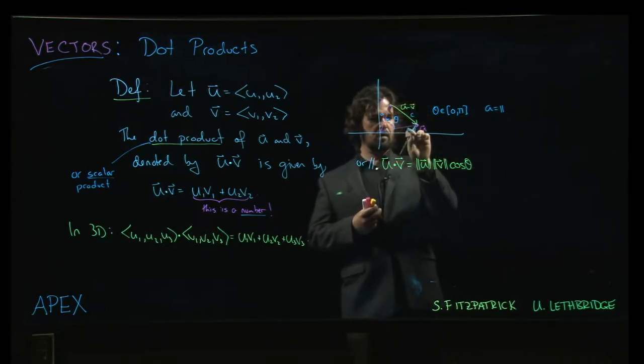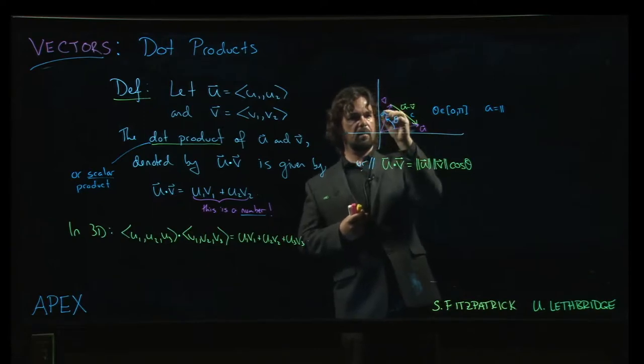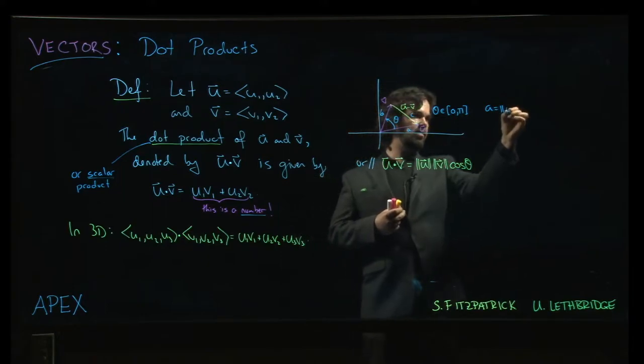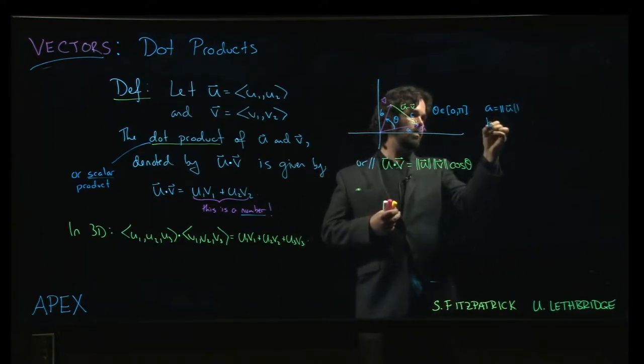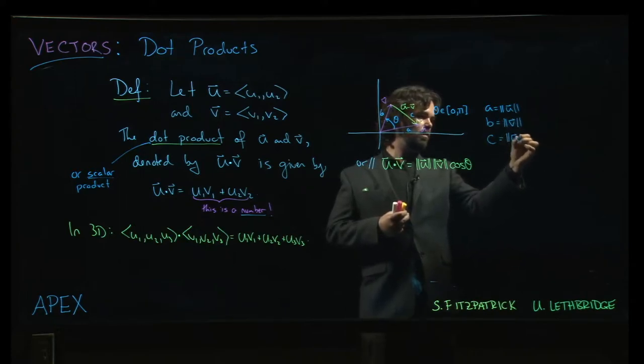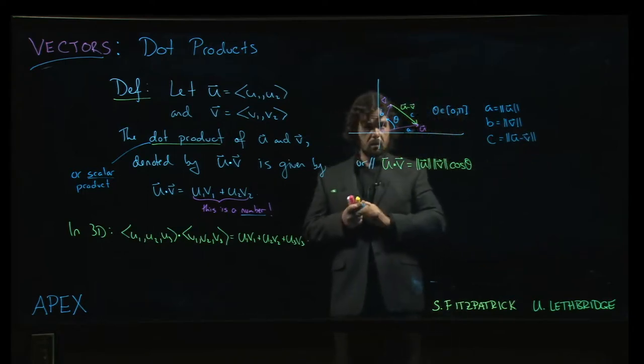Maybe I should, you know what? Just to clean things up, let's do it the other way around. Make that b. So yes, a is the magnitude of u, b is the magnitude of v, c is the magnitude of u minus v.